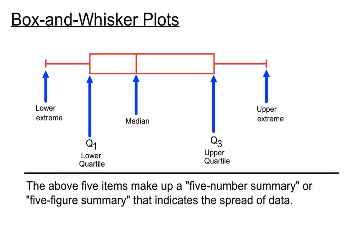That makes up what we call a five number summary, or in some textbooks it's called a five figure summary, and that tells us a lot about the spread of the data particularly.